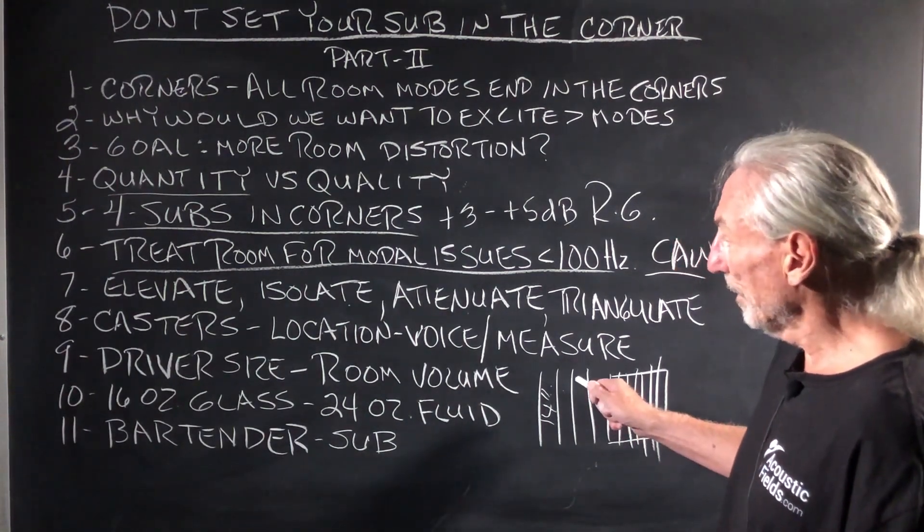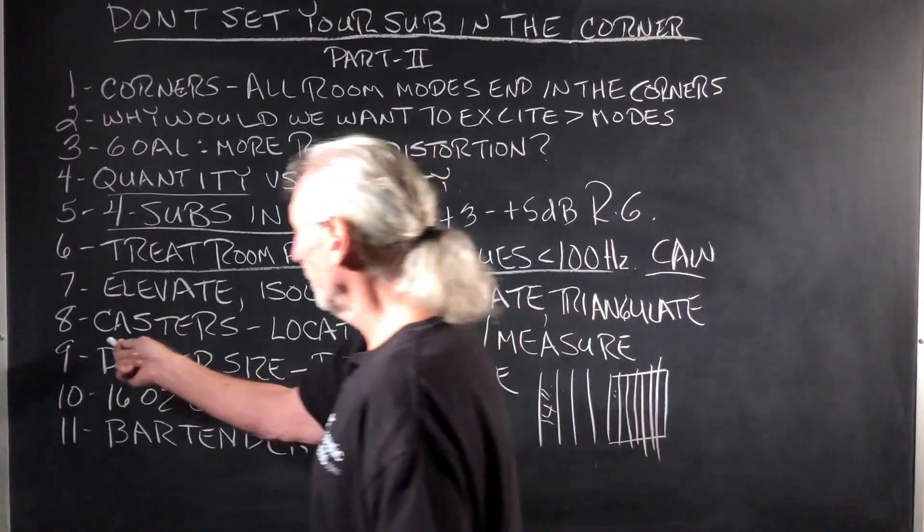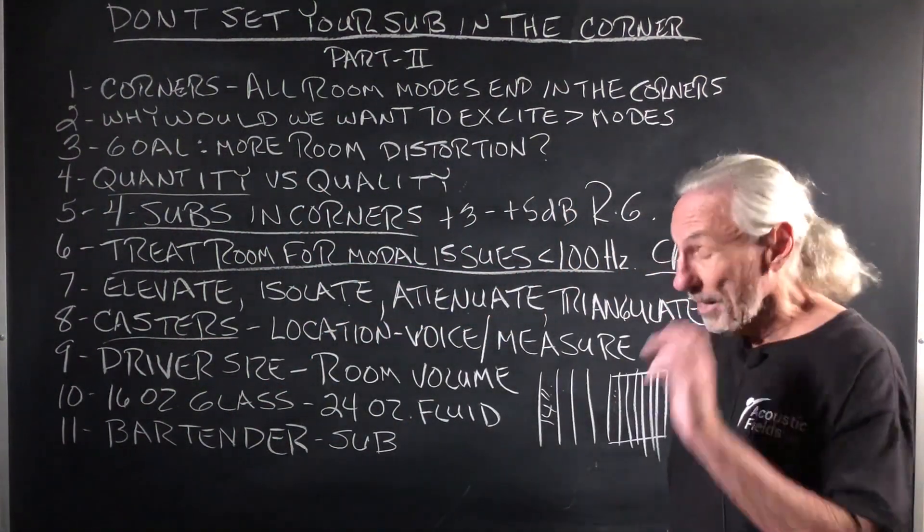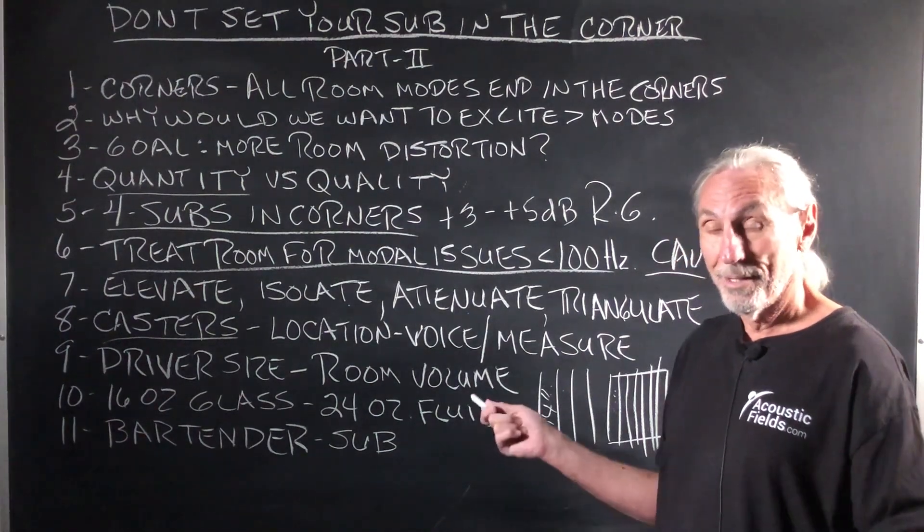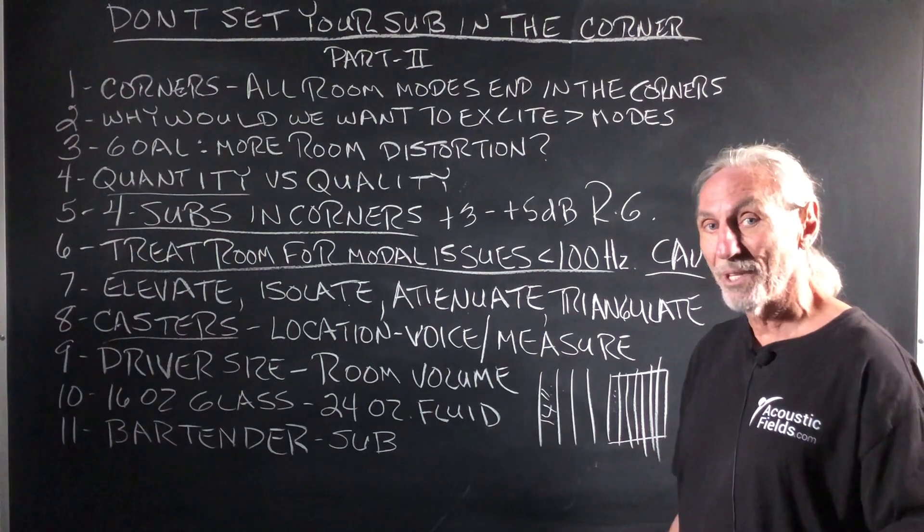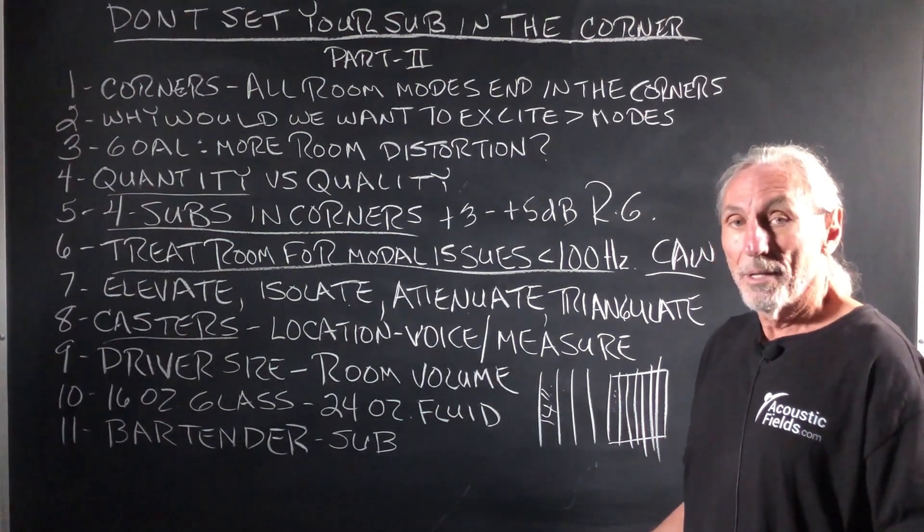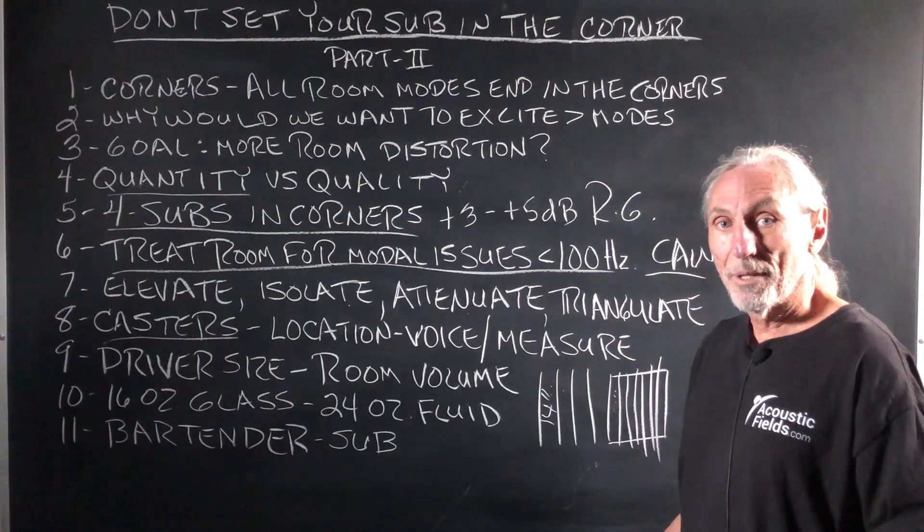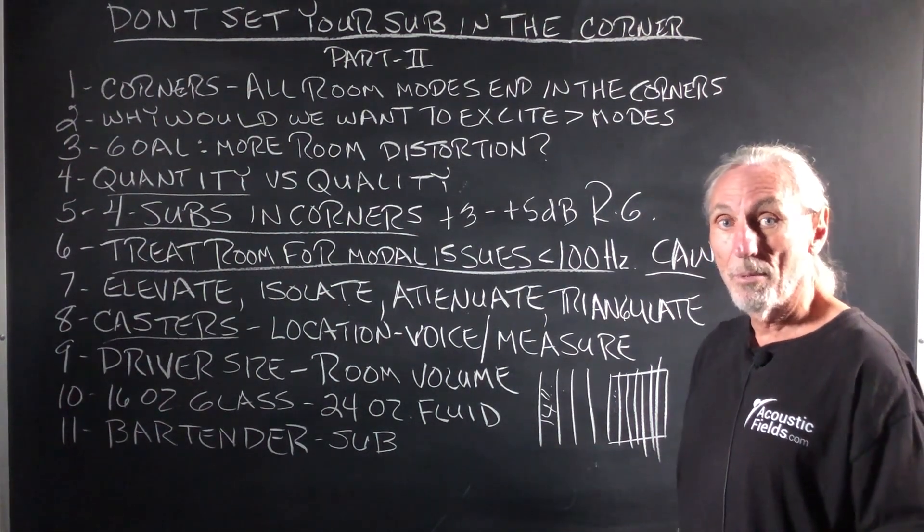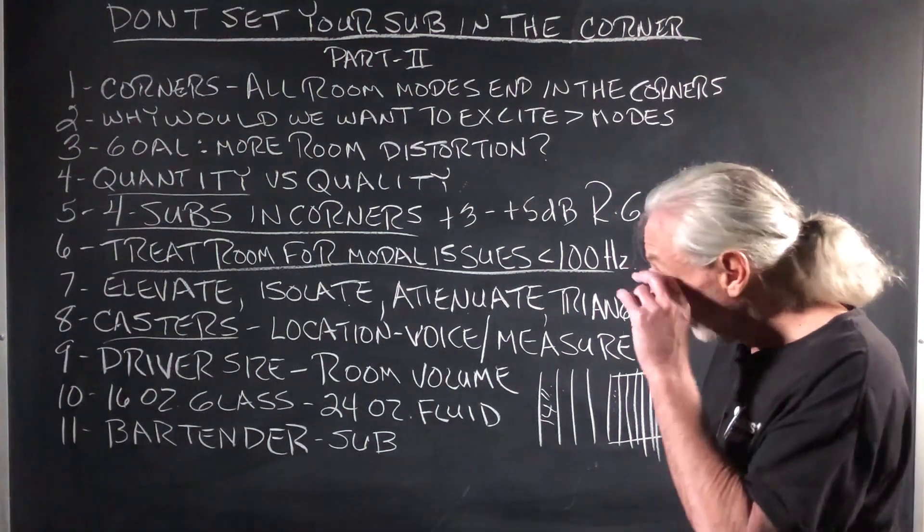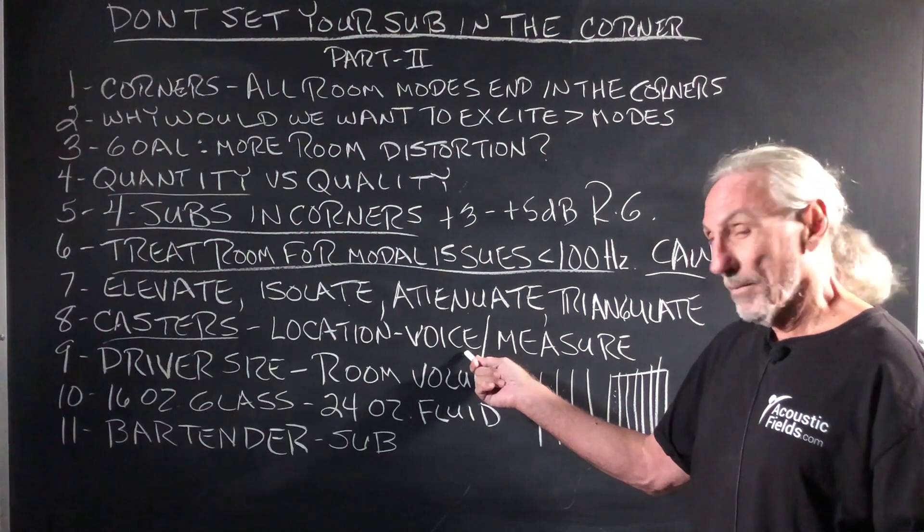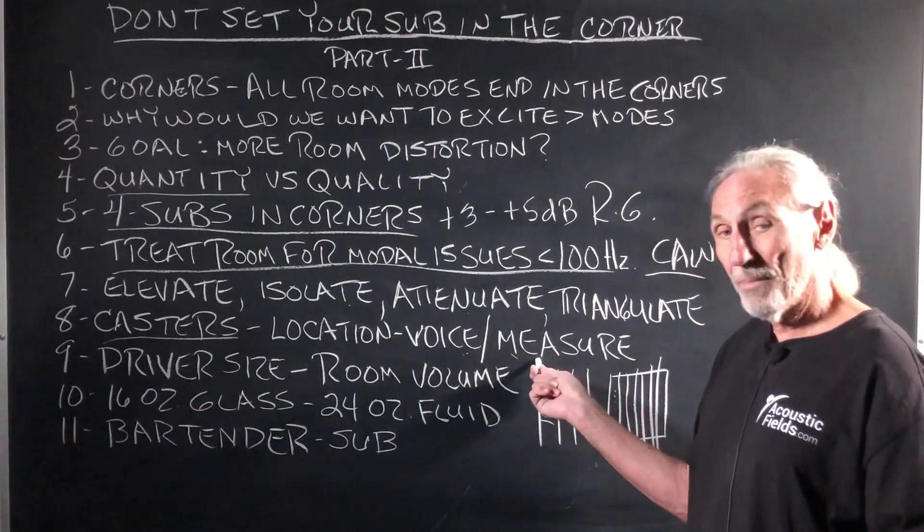So the units are all on casters. I can't think of a better thing for a subwoofer platform than to have it on wheels. Because you got to figure out where to put it. Yeah, there's formulas people say and use and all that. Great. They're amplitude specific. They might work at 80 dB SPL. You turn up a dB or two dBs, they won't work. So the bottom line here is you got to voice it. You got to move it around and listen.